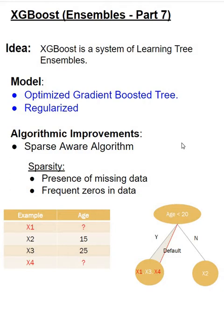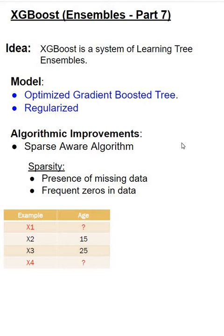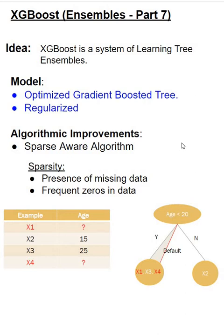Now let's look at what happens when there is sparsity in the data. In this example, we have an example column and an age column where age is missing in two of the entries, X1 and X4. In such a case, how would the tree be built? One of the things that XGBoost does is, when it sees missing data, it tries to guess the best possible default data for such records and assigns a default direction for those records. It uses that for its tree buildup. In our particular case, for age less than 20, both X1 and X4 are bucketed along with X3, because the default direction for them, as per XGBoost, is age less than 20.